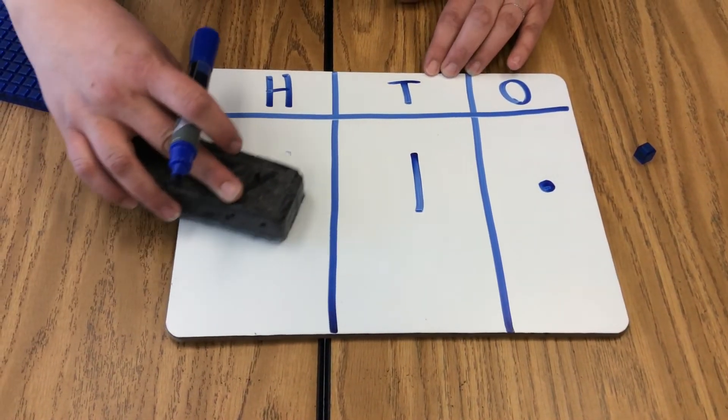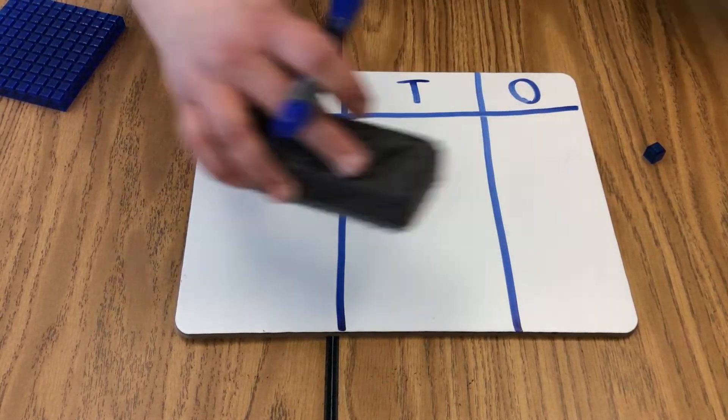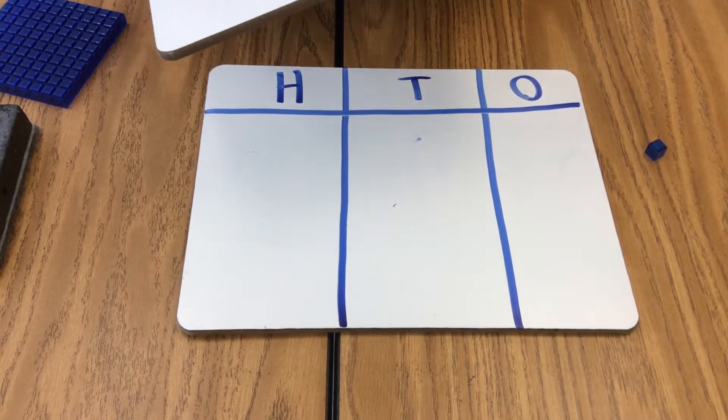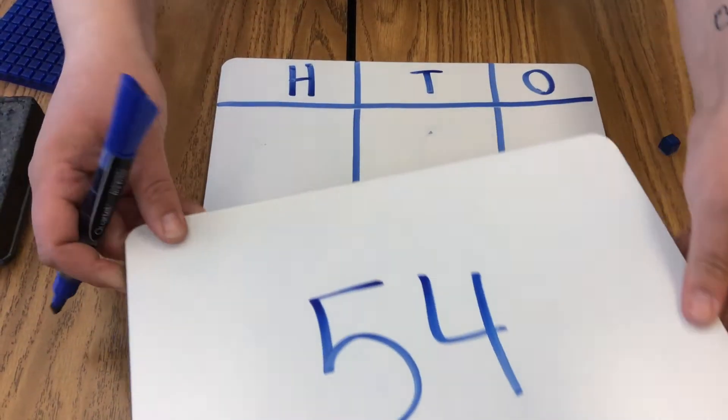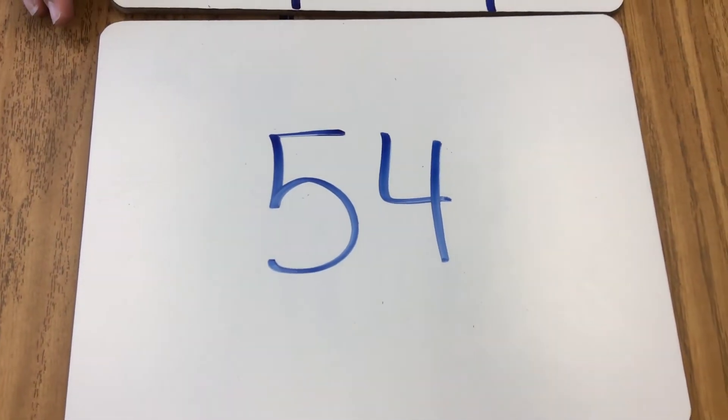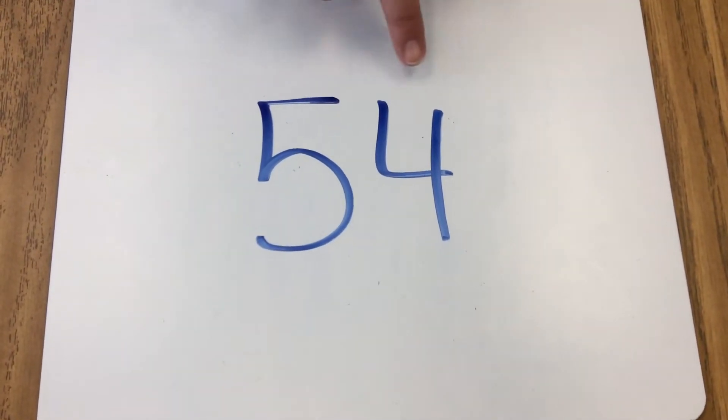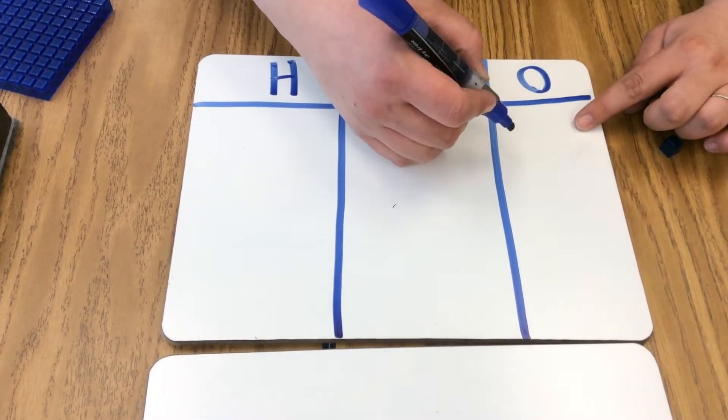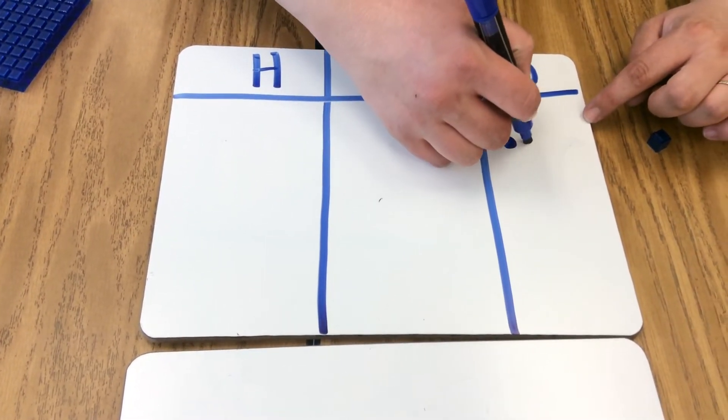We're going to practice modeling a few different numbers. The first number we're going to practice modeling is the number 54. In the number 54, we have five tens and four ones. We're going to start in our ones place, and we're going to draw four ones.